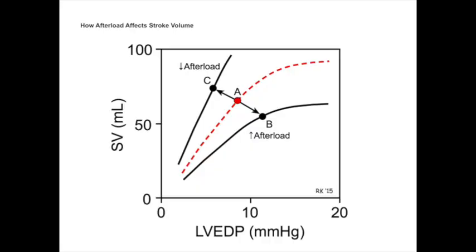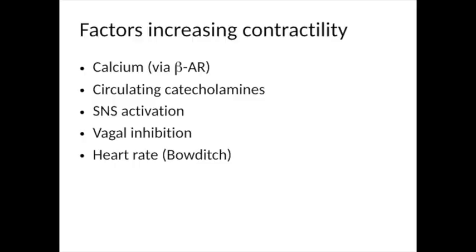Afterload, in simple terms, is the resistance offered by the systemic circulation to cardiac output. This will vary according to circumstances of pressure within the ventricular chambers and with the systemic pressure. A number of factors influence contractility — the heart's ability to pump in an appropriately powerful way. These include calcium release within the cells, which in turn is related to stimulation of beta adrenoreceptors.